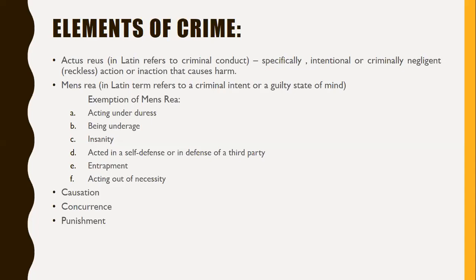Another element of crime is causation — the causal relationship between the legally forbidden harm and the actus reus. The criminal act must lead directly to the harm without a long delay. Next is concurrence, meaning there must be a concurrence between the actus reus and the mens rea — the criminal conduct and the criminal intent must both be present.